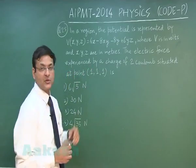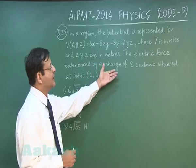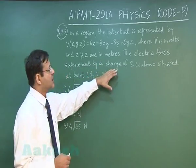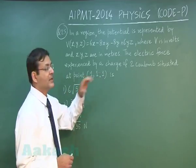Now, the electric force experienced - you have to first calculate electric field here, then multiply by the value of charge that will give you electric force. The electric force experienced by a charge of 2 coulomb situated at point (1,1,1) is...